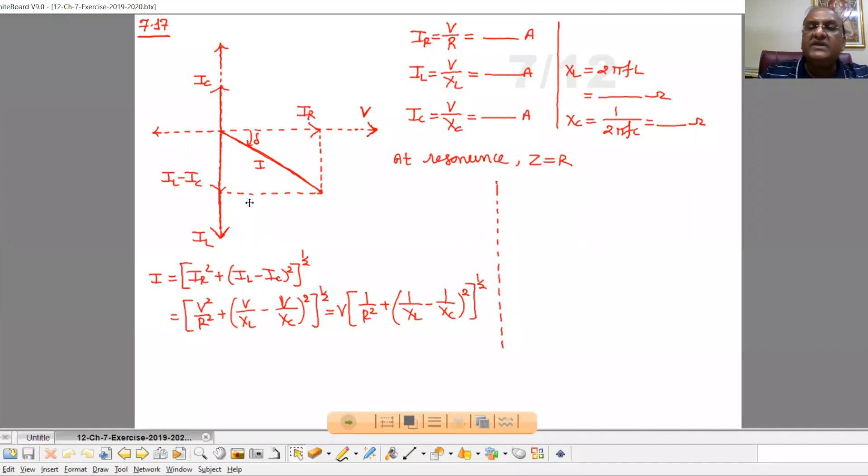In the case of the inductor, the current lags behind by π/2 in phase with respect to the voltage. So the current phasor for the inductor is represented at minus π/2 with respect to voltage, therefore on the negative y-axis.